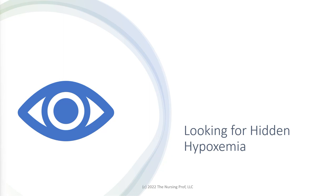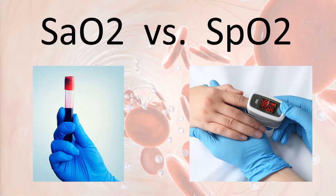In a study done recently, we looked at SaO2 versus SpO2 in different patient populations looking for hidden hypoxemia. Hidden hypoxemia is hypoxemia where we have an oxygen saturation less than 88% in patients where our pulse ox is saying the oxygen saturation is greater than 92%. The SaO2 is the amount of saturated oxygen measured in the blood by a blood gas — it's a lab test actually measuring what's in the blood — versus our pulse ox SpO2, which measures by way of that light going through the fingers.